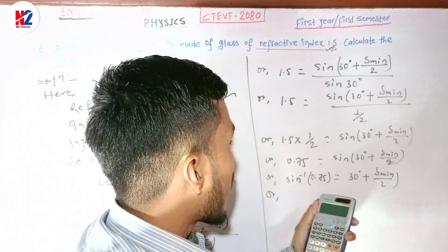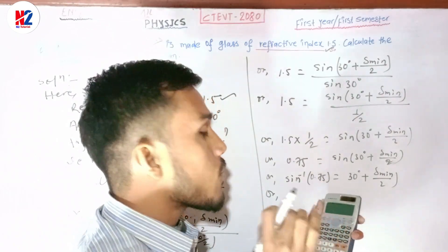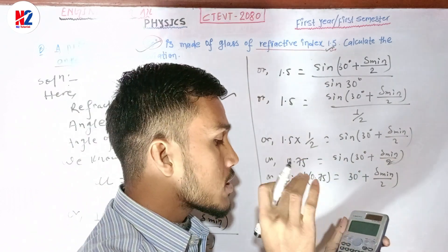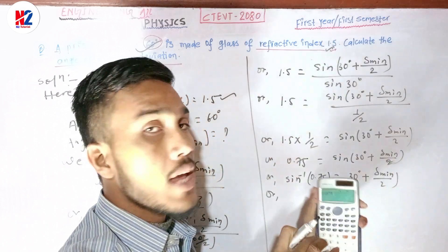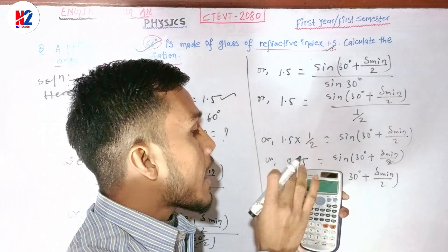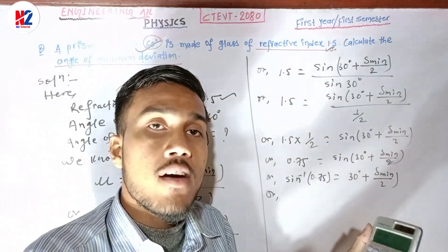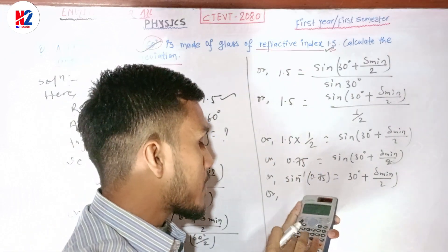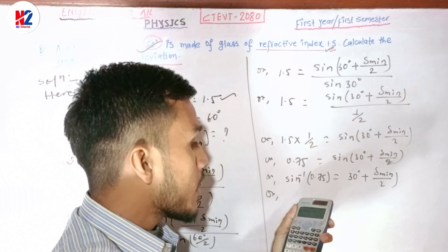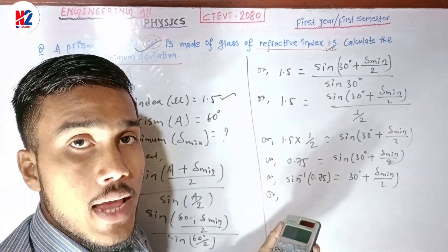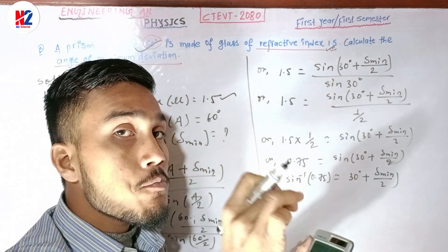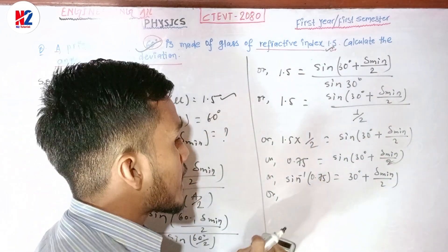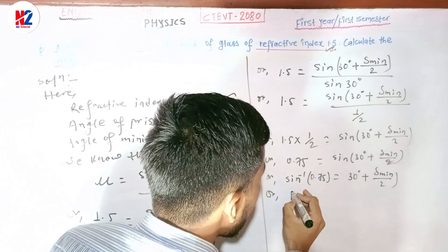Now we need to calculate the sine inverse. Using sine inverse of 0.75, we get 48.59 degrees. So (30° + δ_min / 2) equals 48.59 degrees. I will round it accordingly.